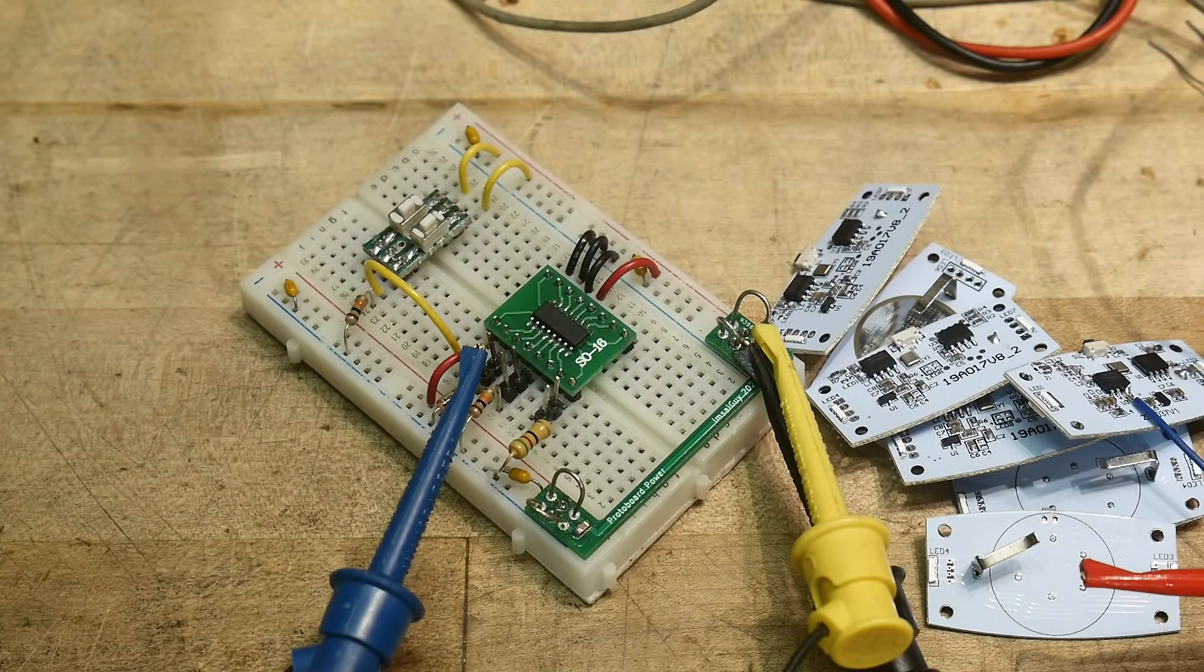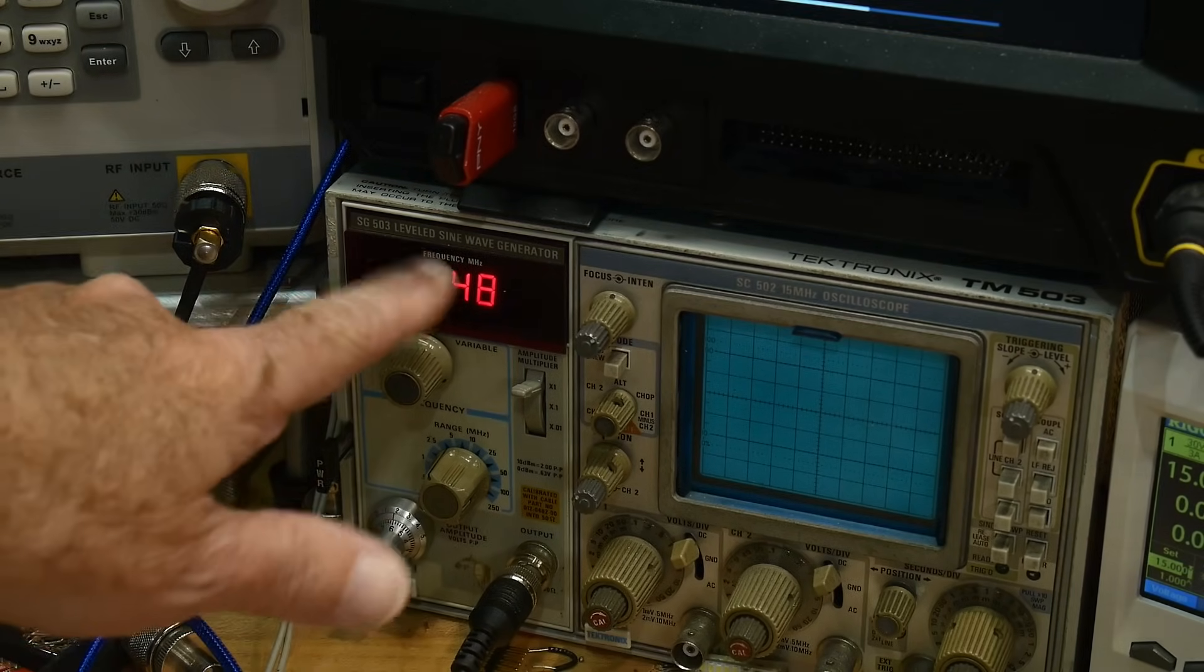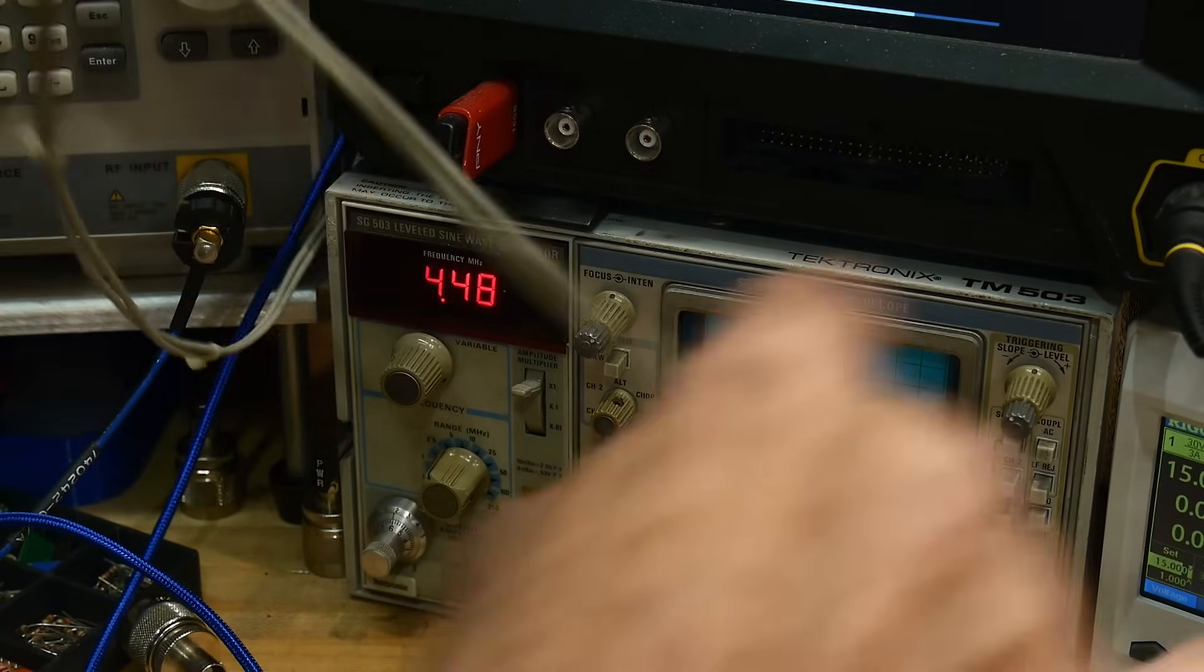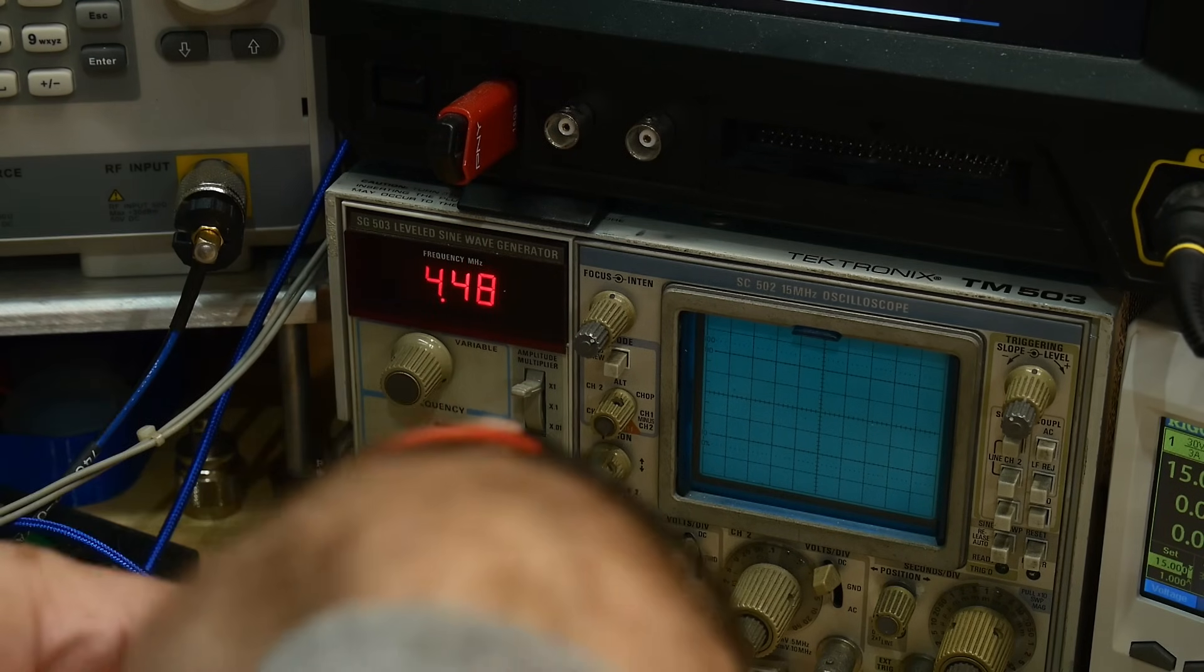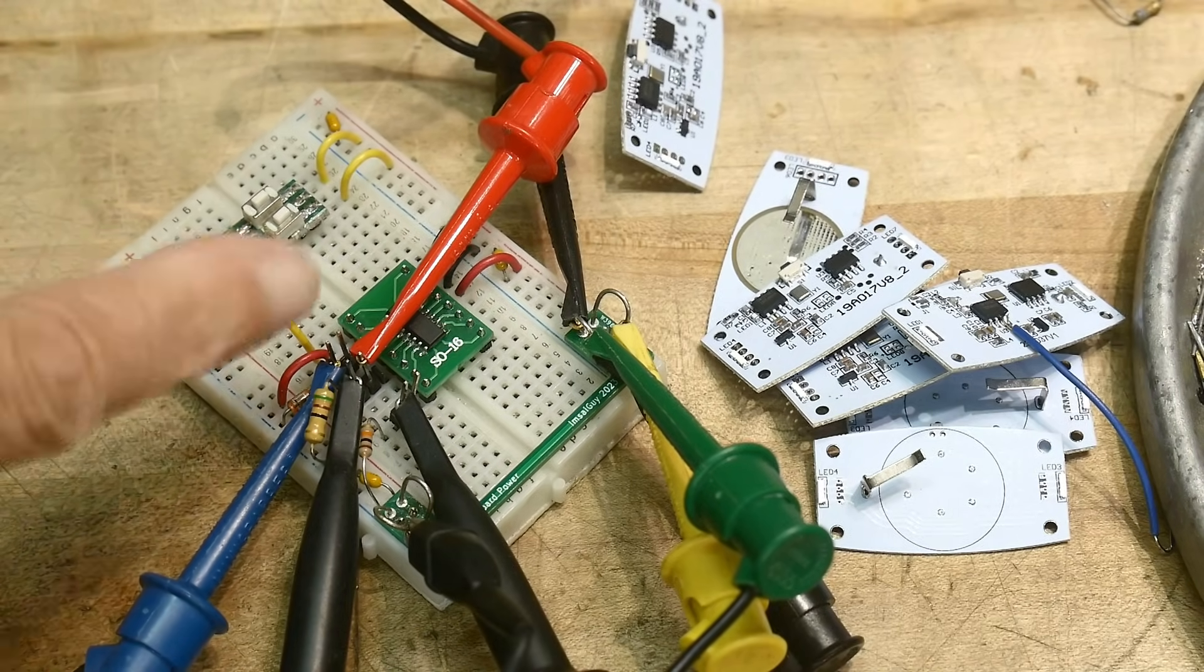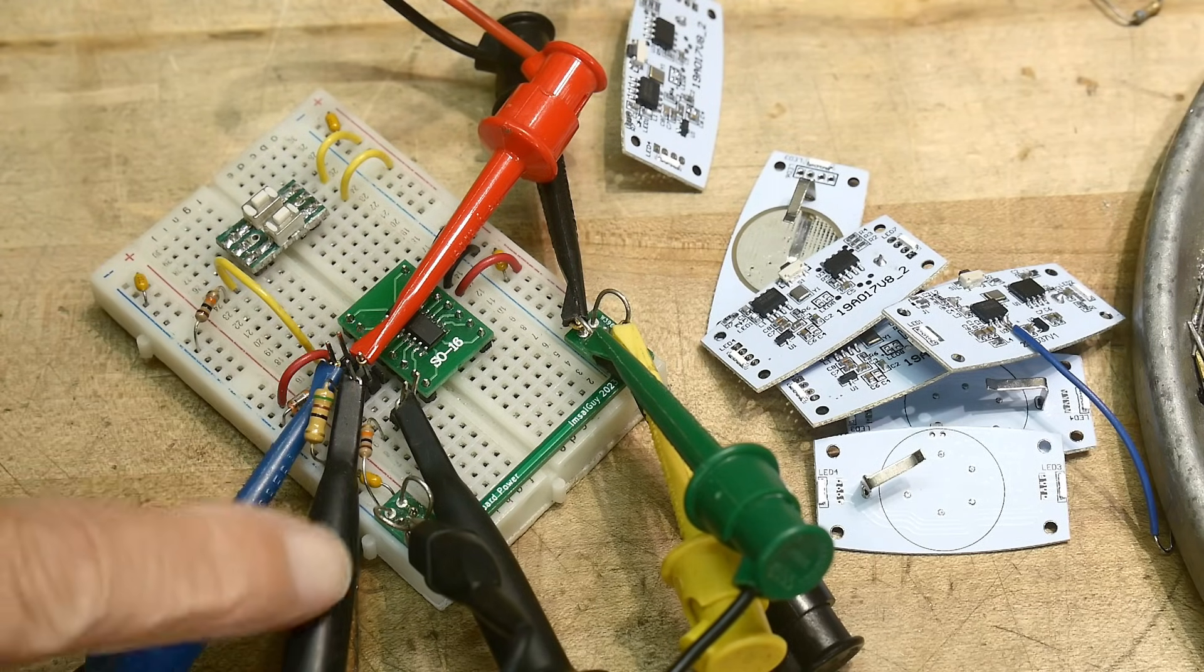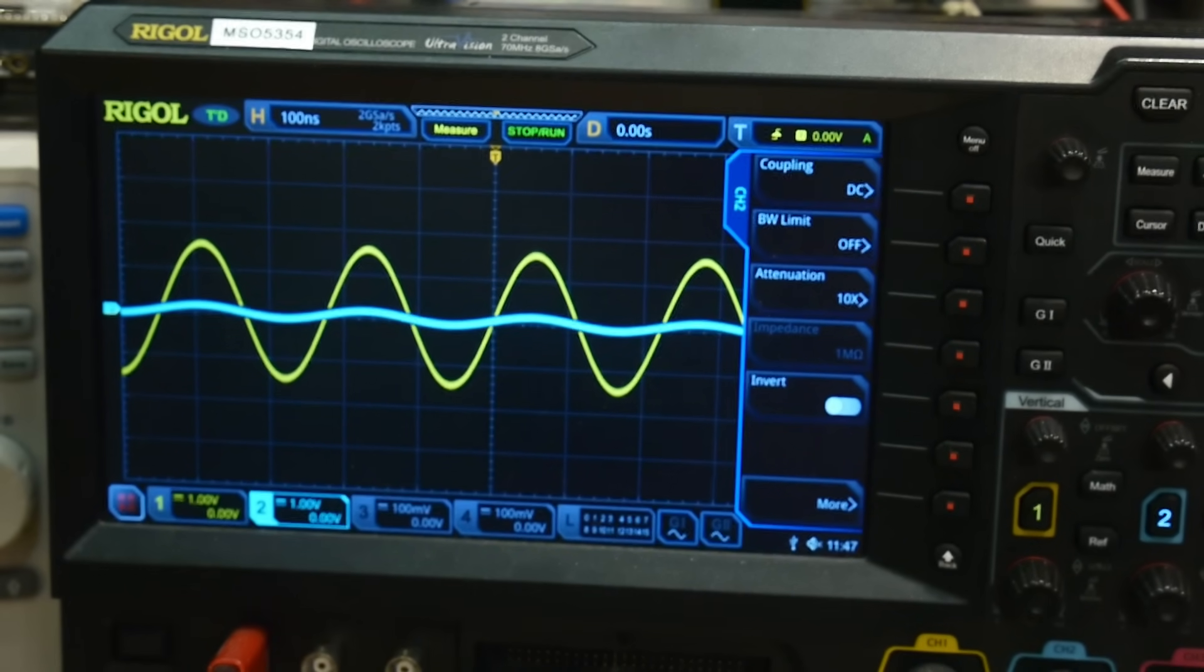Alright. So what we're going to do, we're going to be using my new toy, which is my SG503 sine wave generator. So let's hook him up. Alright. So I have the function generator coming in to the switch and we're going to be monitoring the input of the switch with channel one, the output with channel two. And there we go.